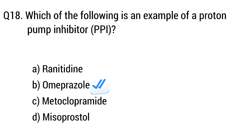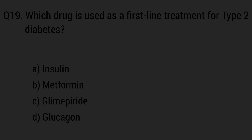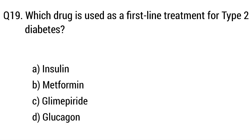Question number nineteen. Which drug is used as a first-line treatment for type 2 diabetes? The right answer is option B: Metformin.